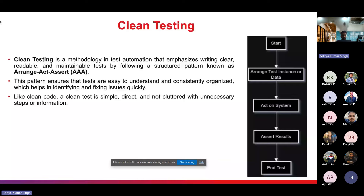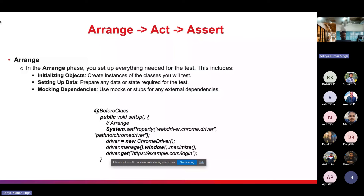Maintainable tests are modular, use reusable components, and avoid hard-coding values that may change over time — highlighting the importance of parameterized test values and reusability. Clean tests are simple, direct, and not cluttered with unnecessary steps or information. They focus on the essential elements required to verify functionality, avoiding excessive setup or redundant assertions that do not add value. Now we will go through the layers of the Triple-A pattern — Arrange, Act, and Assert.